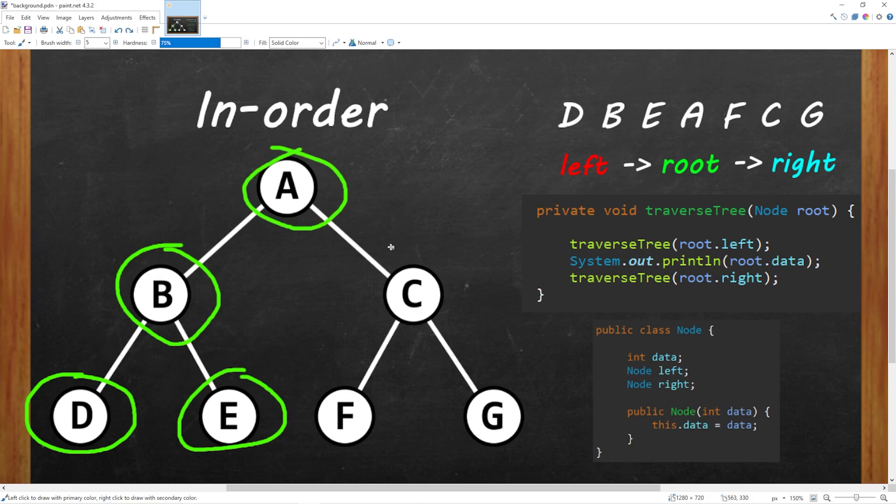All that's left is to go right, so we will go to C. However, we can go left, so we will visit F first, then C, then G. So this is in-order traversal.